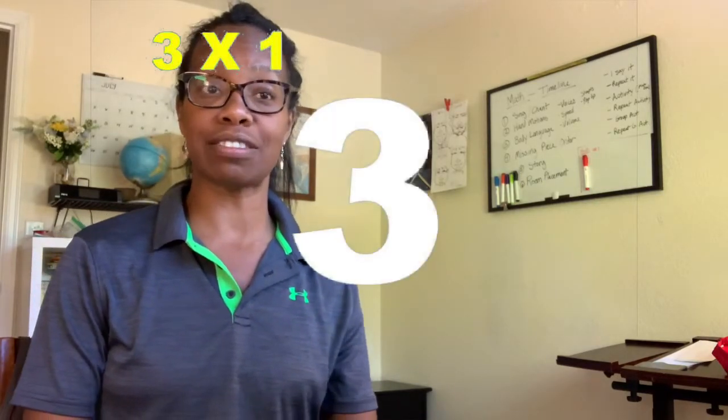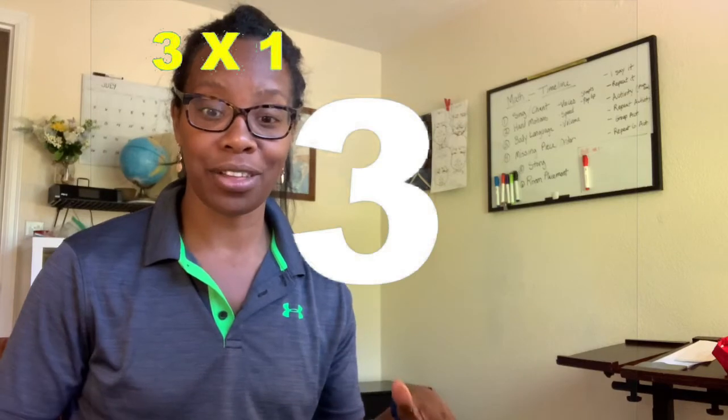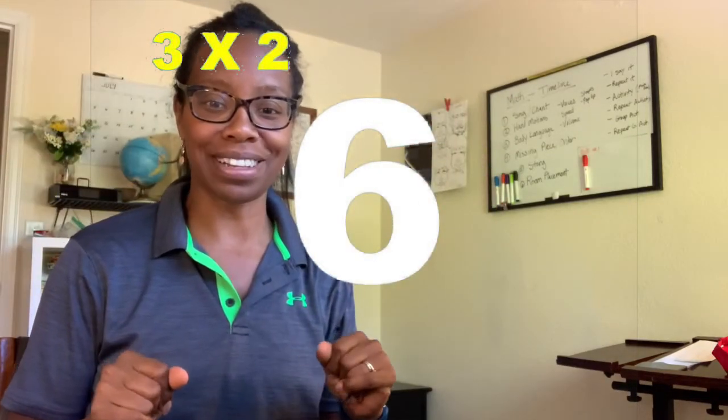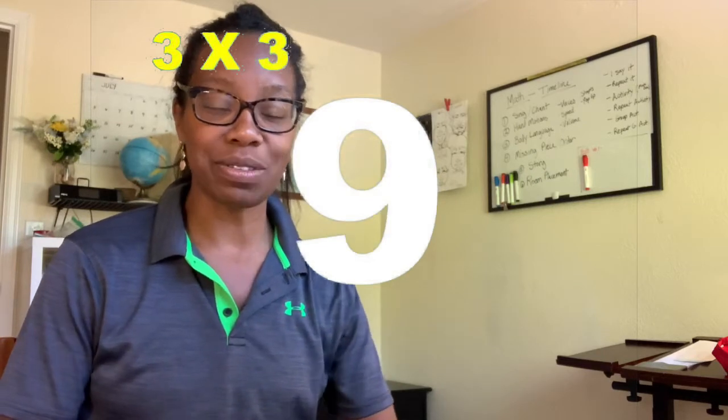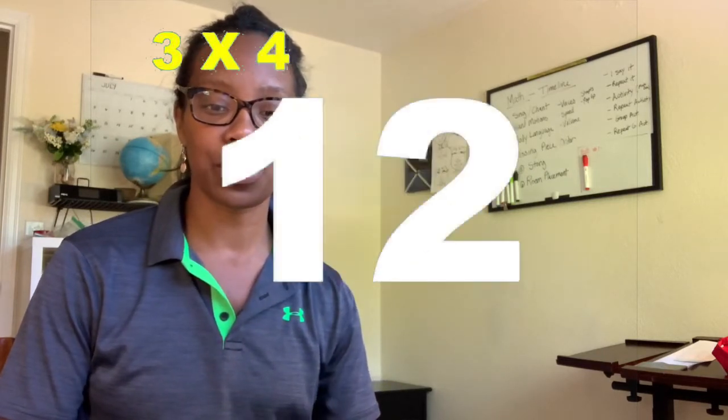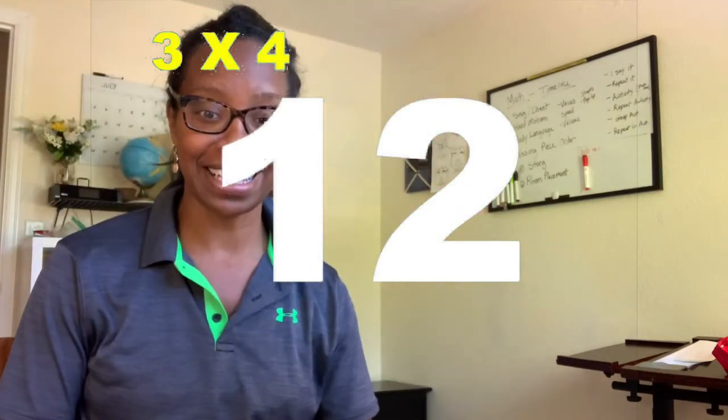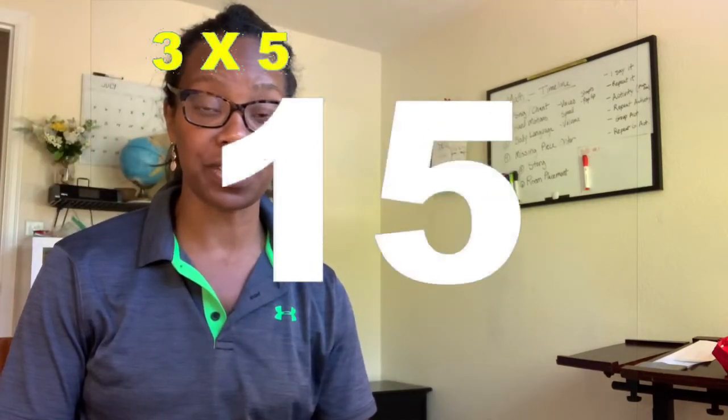Three times one is three. Three times two is six. We're going to just say it out. We're not going to do the song. We're just going to say it out. And then if you hear an even number, I want you to pop up, okay? Ready? And three times one is three. Three times two is six. I should have saw you pop up. Good. Three times three is nine. Three times four is twelve. Pop up. Very good. Three times five is fifteen, and so on.